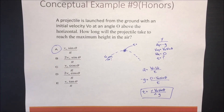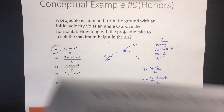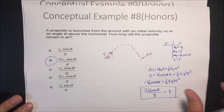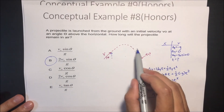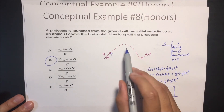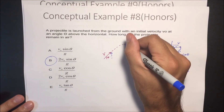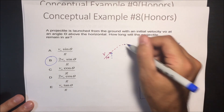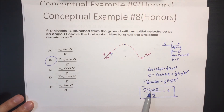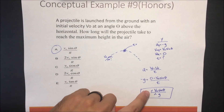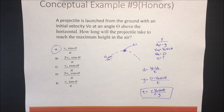Notice from the previous problem that the total time in the air is 2·v-initial·sinθ/g, so the time to reach maximum height is exactly half of that — just v-initial·sinθ/g, removing the factor of 2. That confirms our answer. Thank you for going through all this, and good luck with everything in projectile motion.